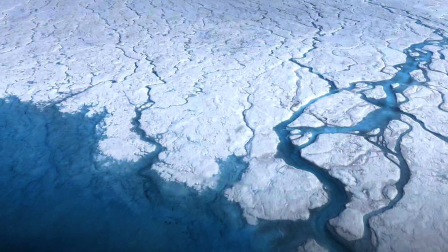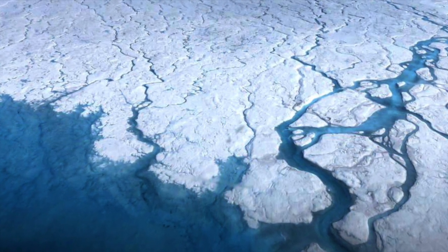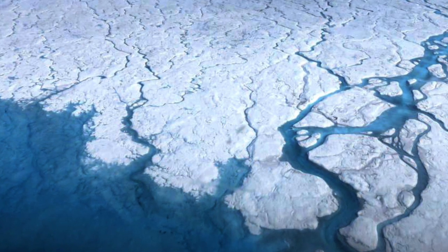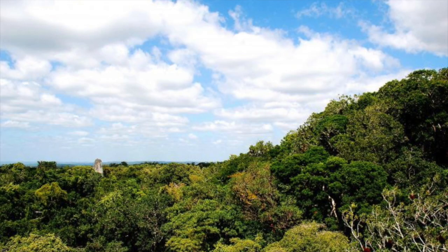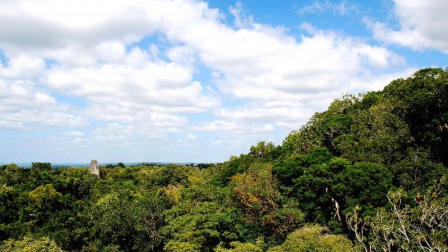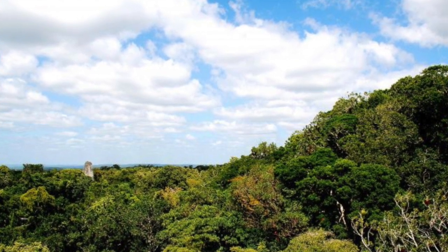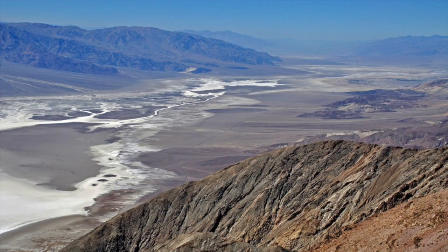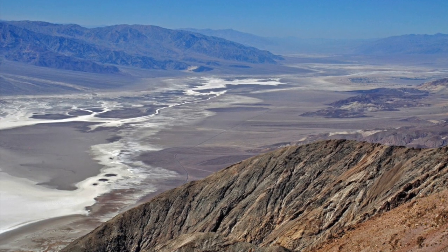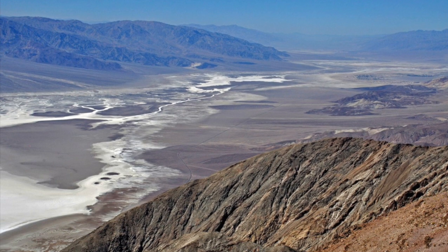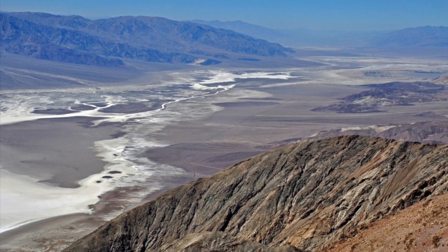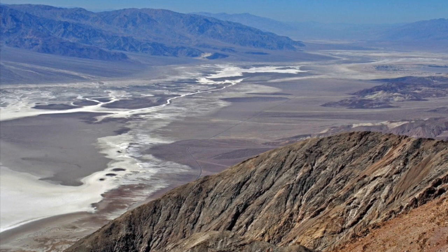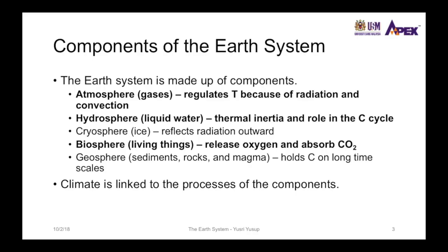Then there is the cryosphere, or solid water and ice, which because of its white color reflects incoming solar radiation outward, helping to reduce temperature on Earth. The fourth sphere is the biosphere, made up of living things that release oxygen and absorb carbon dioxide through biogenic processes. The last is the geosphere, made up of sediments, rocks, and magma, which holds carbon on very long time scales — on the order of thousands to millions of years.